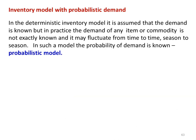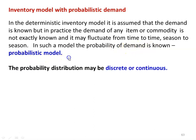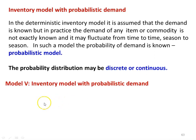In the deterministic inventory model discussed earlier, it is assumed that the demand is known. But in practice, the demand of any item or commodity is not exactly known — it may fluctuate from time to time and season to season. In such a model, the probability of demand is known as the probabilistic model. The probability distribution may be discrete or continuous. We take model number 5: inventory model with probabilistic demand.